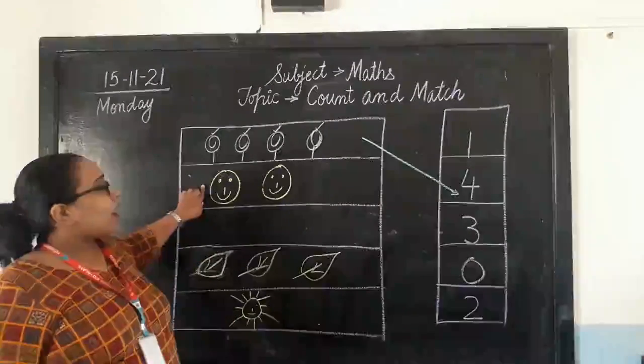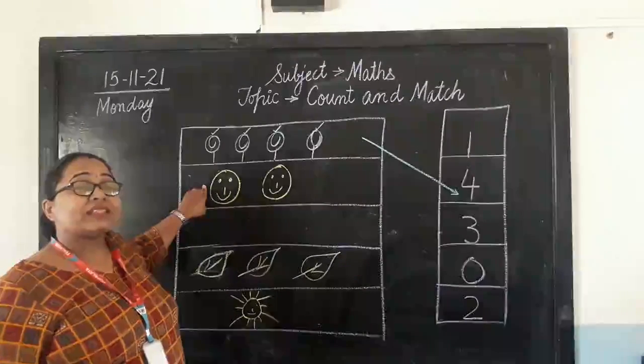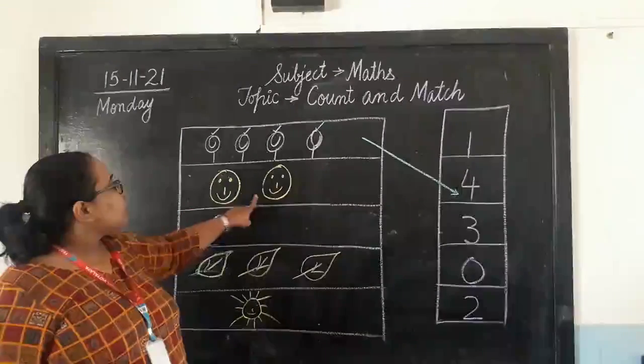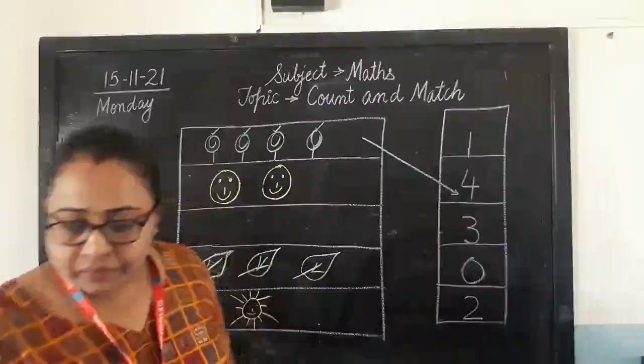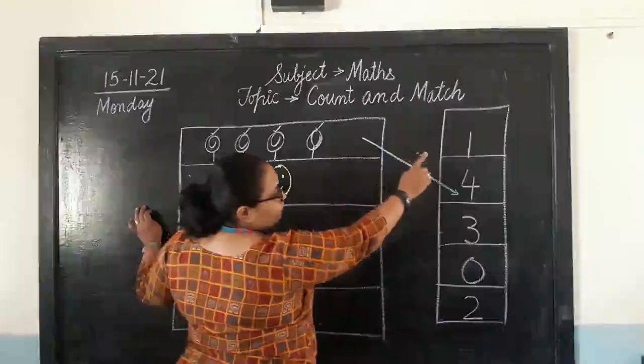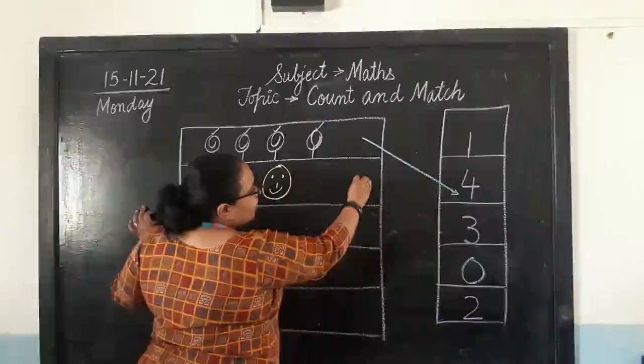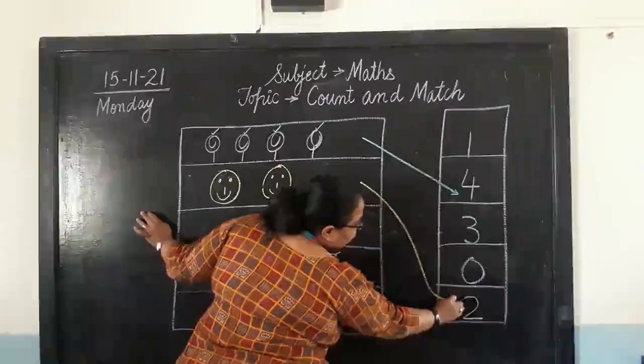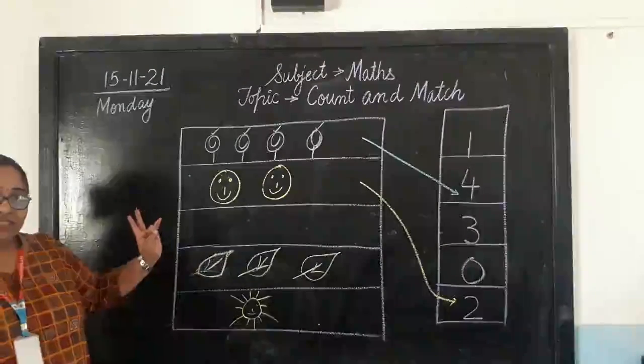Next, we have 2 beautiful smiling faces. So, whenever we see a smile, that face becomes beautiful. Isn't it? Now, we have 2 smiling faces. 1, 2. So, please search for number 2 there. Do we have number 2? Where we have? 1, 3, 0, 2. Here we have. So, let's count these smiling faces with number 2. Like this. Because we have 2 smiling faces.